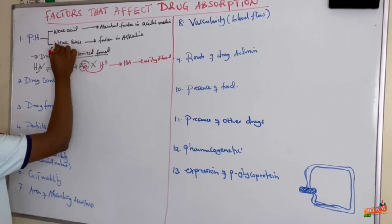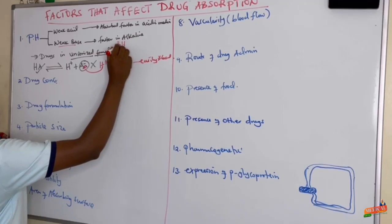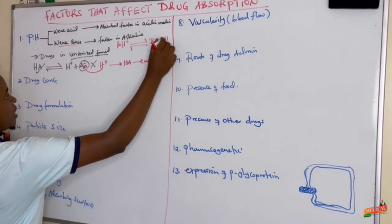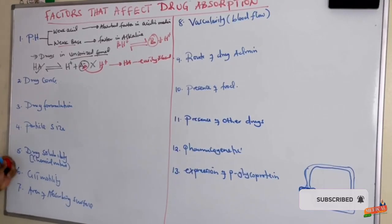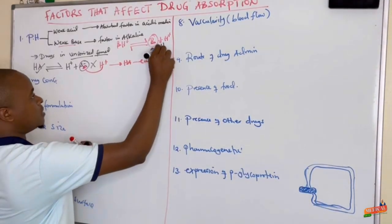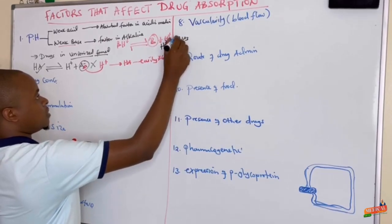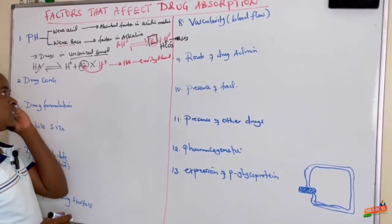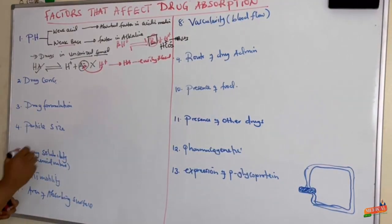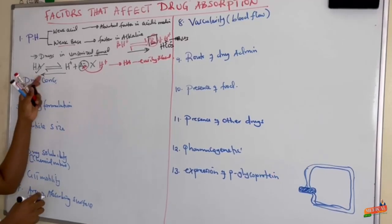For weak basic drugs, when a weak base dissociates it forms drug B plus a hydrogen proton, and it is best absorbed when it is unionized. When we provide an alkaline medium containing bicarbonate, the bicarbonate combines with the hydrogen proton to form weak carbonic acid, leaving the unionized drug to be absorbed — shifting the reaction to the right.